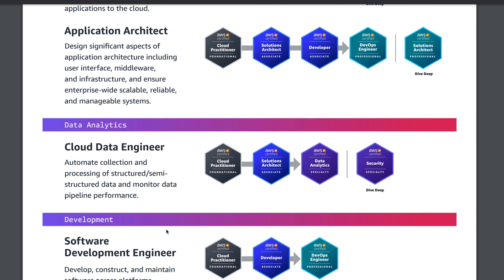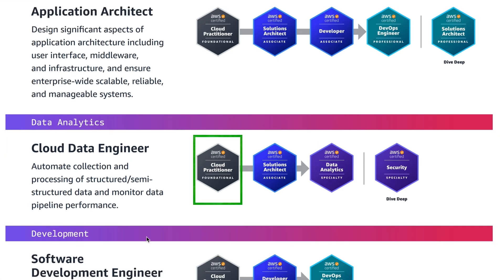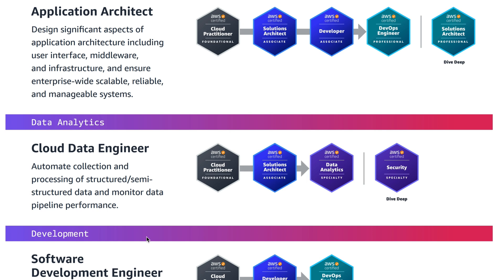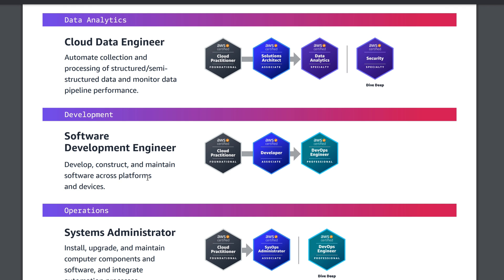There is also a Data Analytics path. If you want to become a cloud data engineer, the roles and responsibilities involve automating collection and processing of structured and semi-structured data and monitoring data pipeline performance. The Cloud Data Engineering path starts with Cloud Practitioner, then Solutions Architect Associate, then Data Analytics Specialty, and finally Security Specialty if you want to master the field.